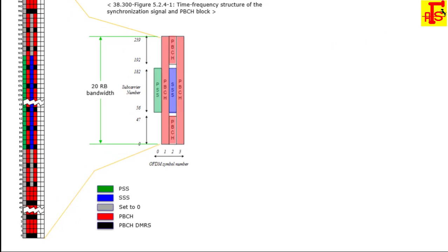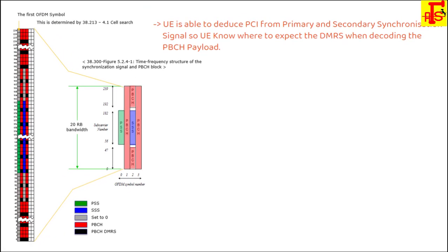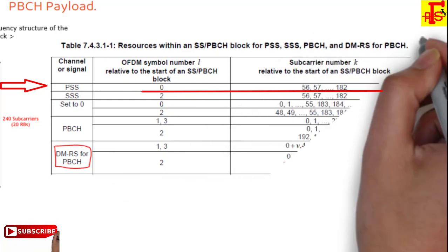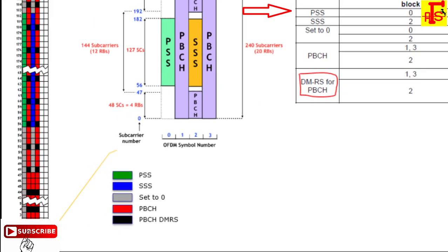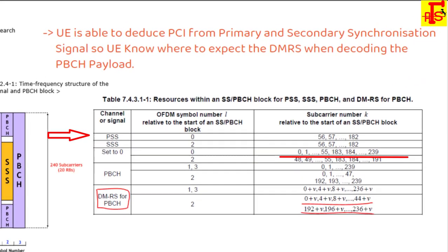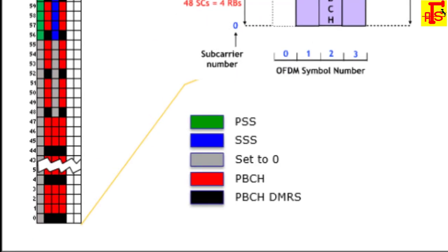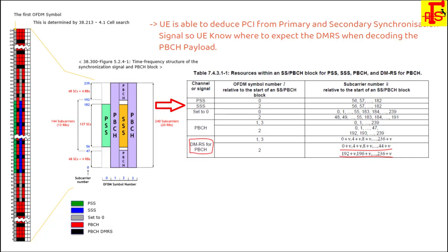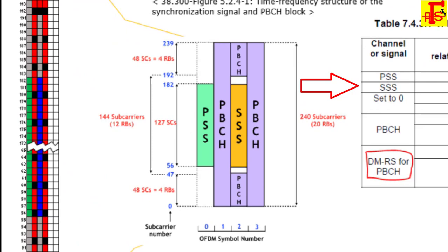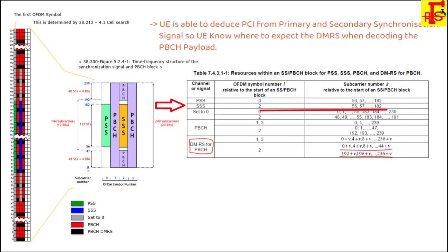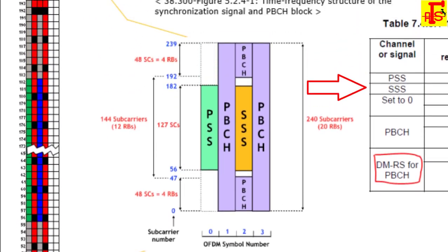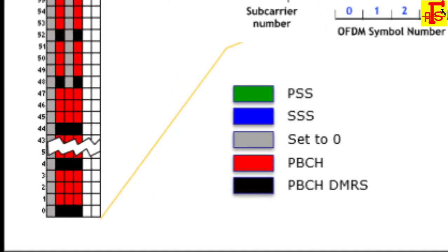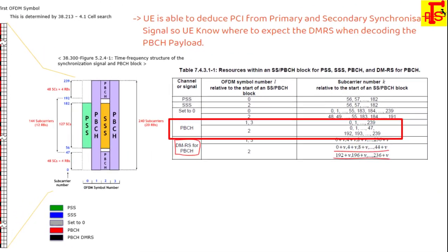Overall the 20 RB means 240 subcarriers. Subcarriers 56 to 182 are used for PSS on 1st OFDM symbol. Remaining subcarriers 0 to 55 and 183 to 239 are set to zero. SSS uses subcarriers 56 to 182 on 3rd OFDM symbol. For 3rd symbol, subcarriers 48 to 55 and 183 to 191 are set to zero. Other subcarriers 0 to 47 and 192 to 239 are used for PBCH.